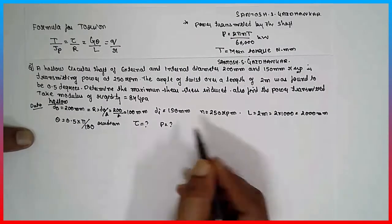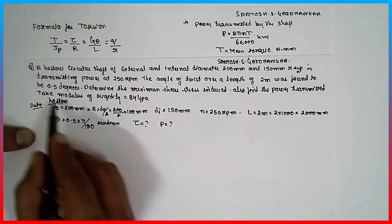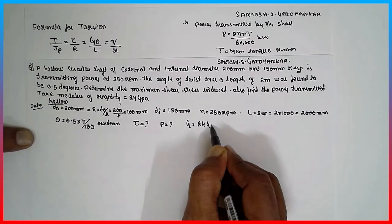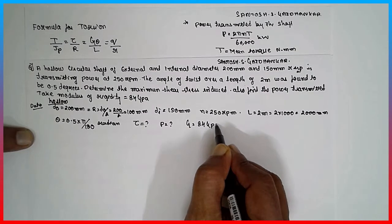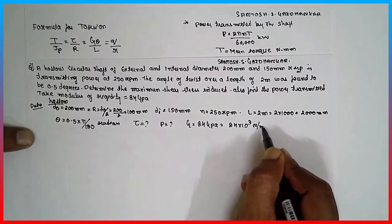The formula I have provided to you. The modulus of rigidity is 84 Giga Pascal, 84 into 10 raised to 3 Newton per mm square.